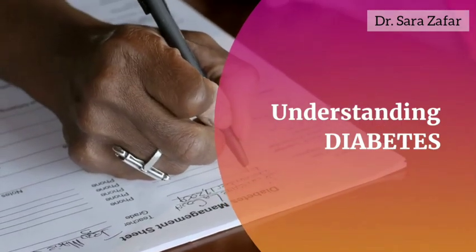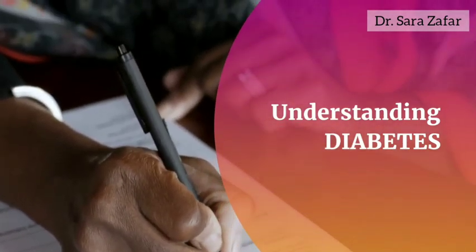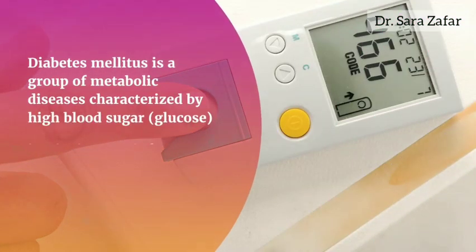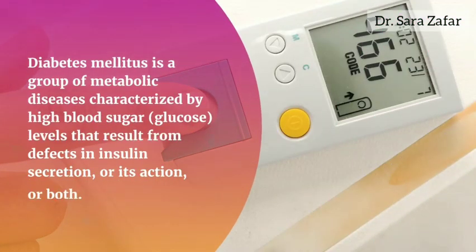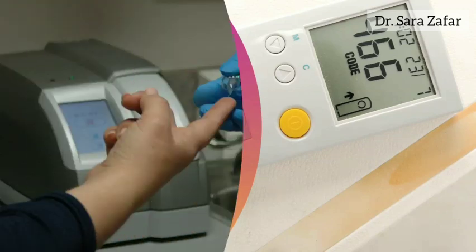Now we'll move forward to understand diabetes in a better way. First of all, we should know what diabetes is. Diabetes mellitus is a group of metabolic diseases characterized by high blood sugar levels that result from defects in insulin secretion, its action, or both.